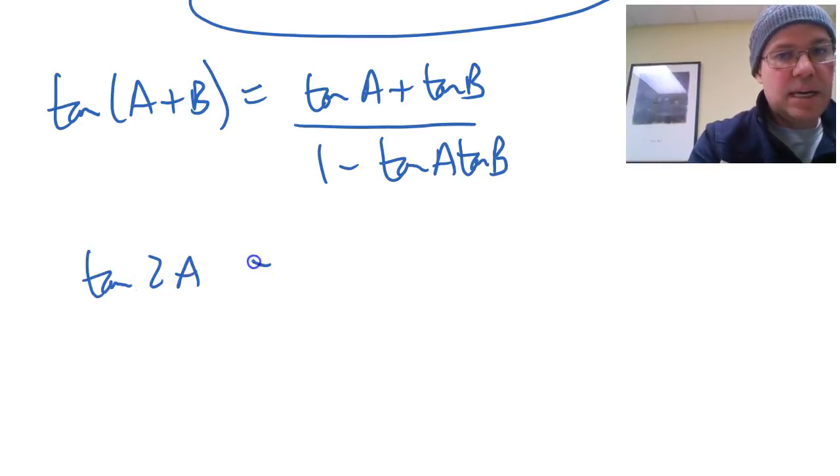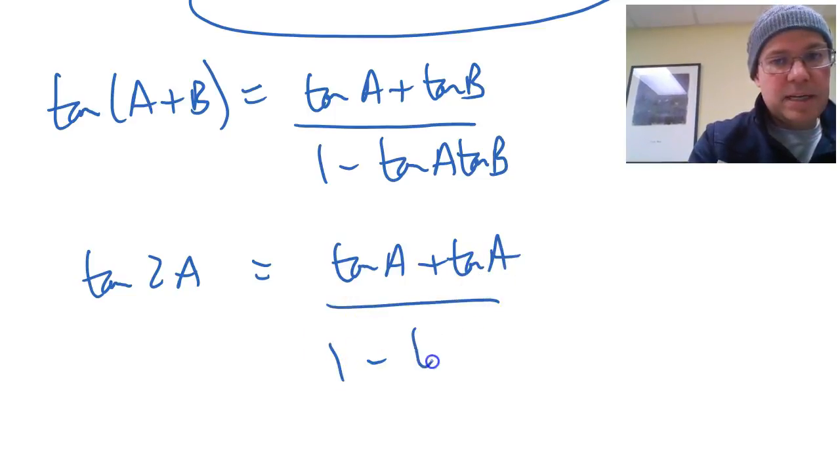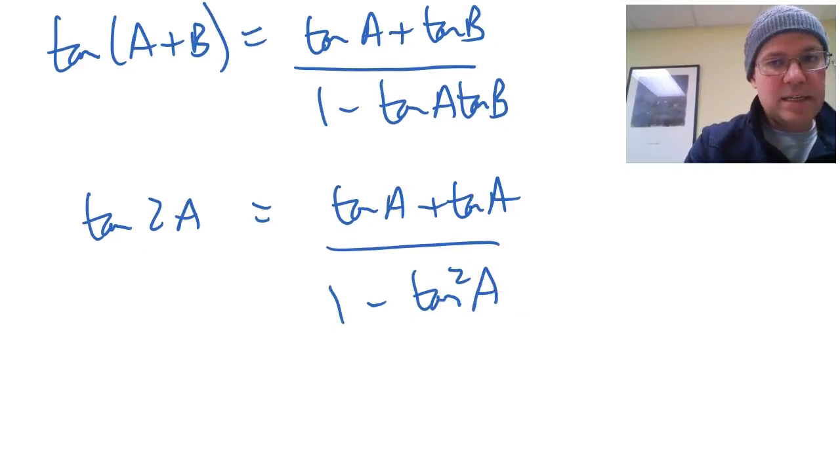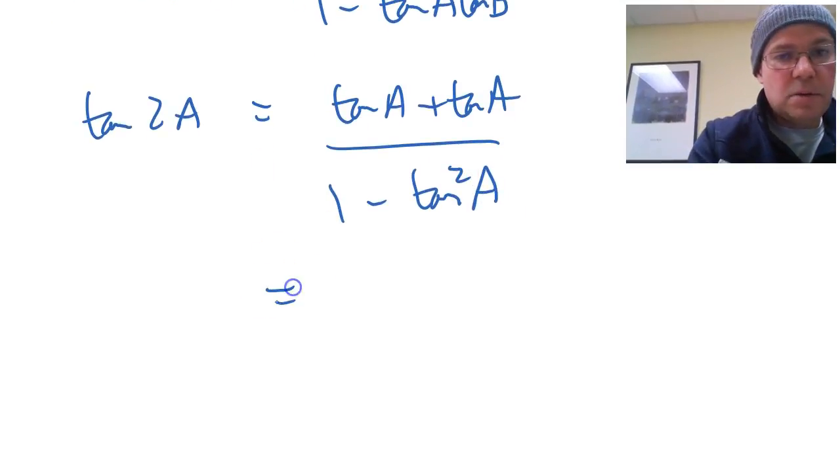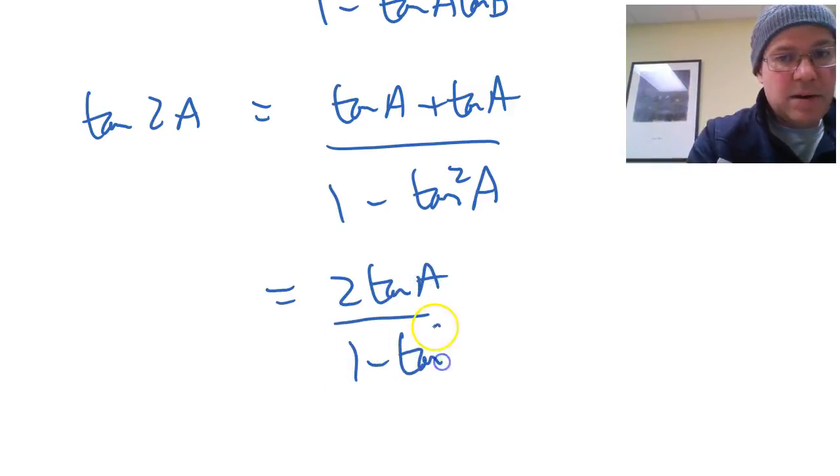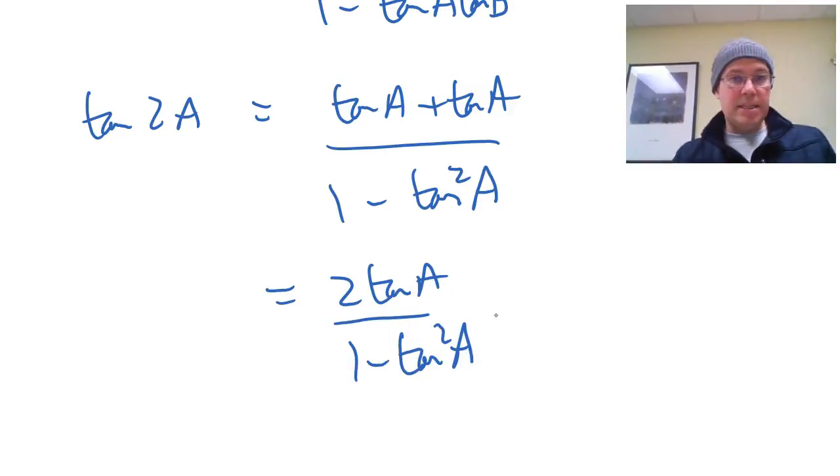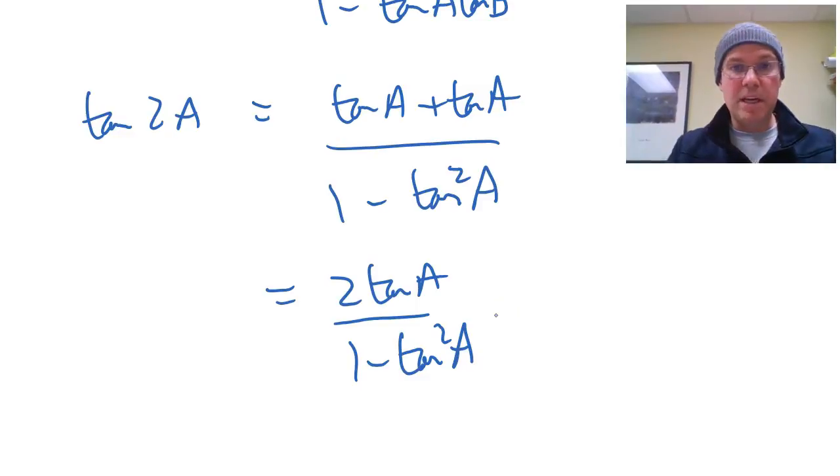So tan 2A equals tan A plus tan A over 1 minus tan A tan A, which I can write straight away as tan squared A, because tan A times tan A. And equally on top there, I've got a 2 tan A over 1 minus tan squared A. And there we have it. There's how to prove the double angle formula for cos 2A, where there are three of them. sin 2A and tan 2A.